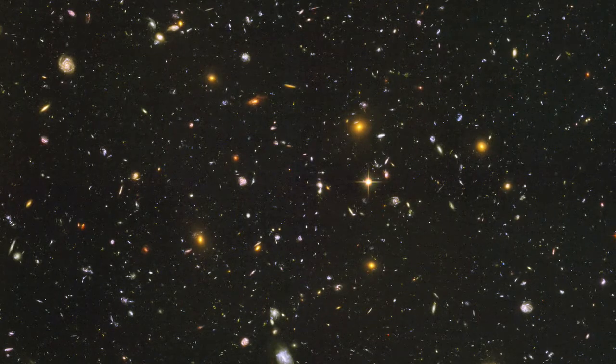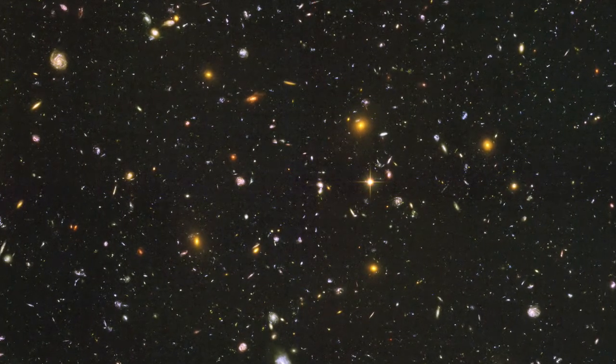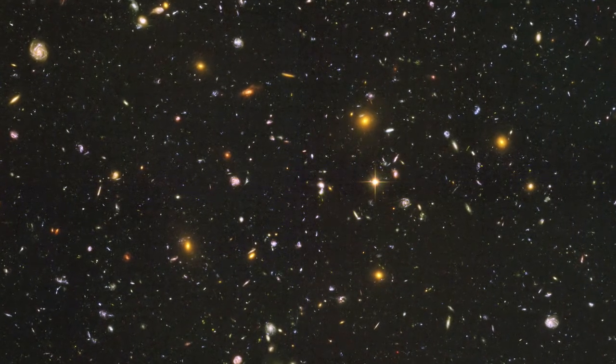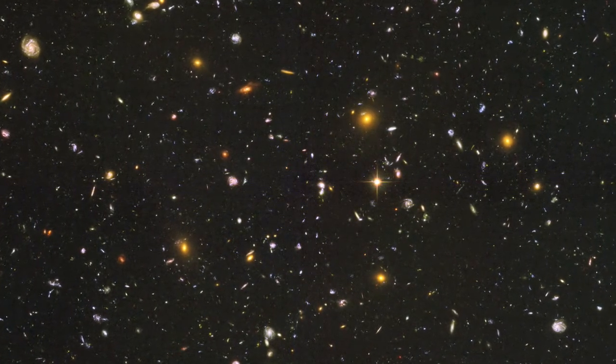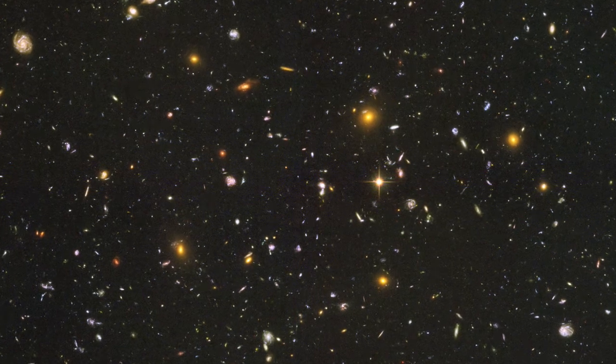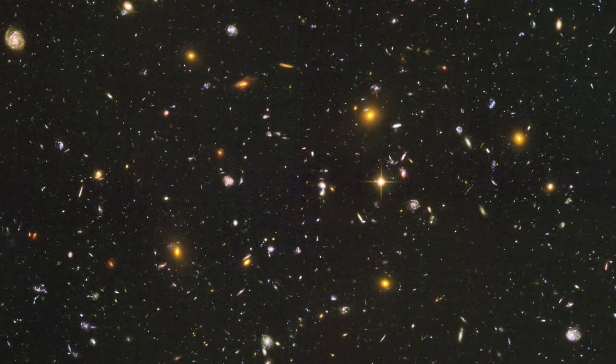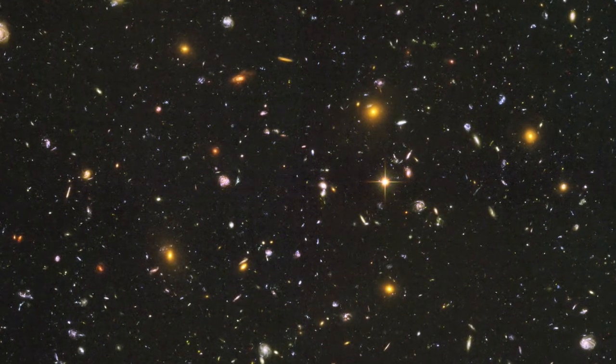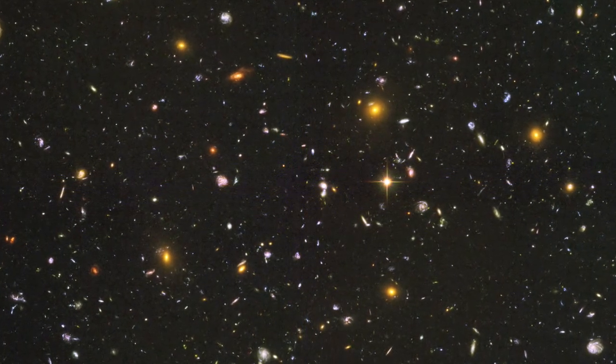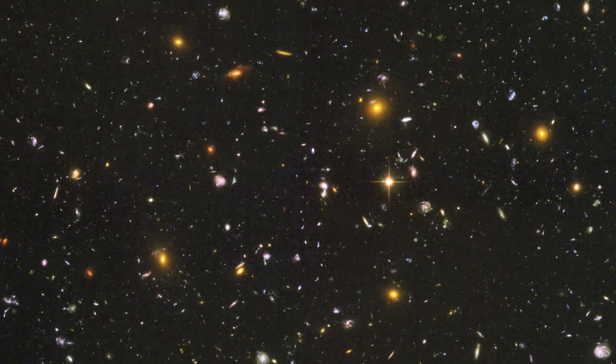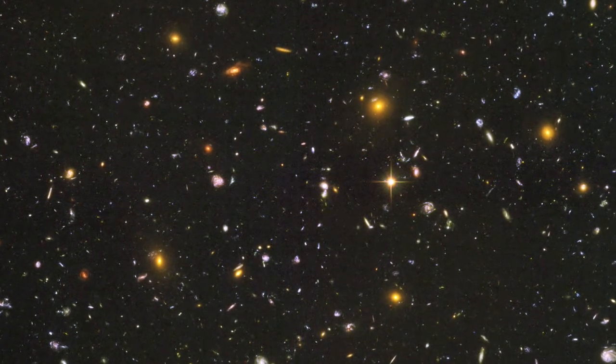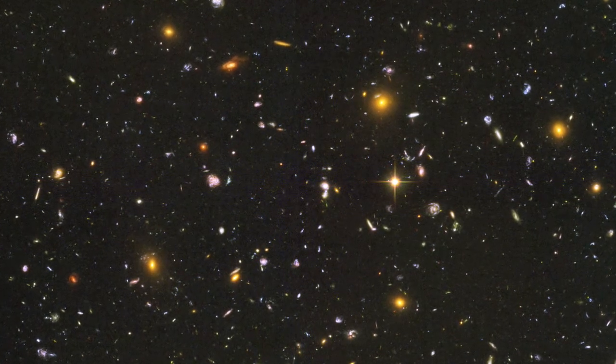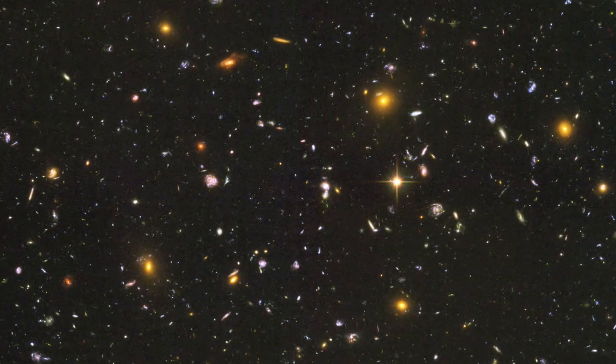This image is known as the Hubble Ultra Deep Field. It is the deepest view ever achieved of the visible ultraviolet and infrared universe. The image contains about 10,000 galaxies in an area of sky that is just one-tenth of the diameter of the full moon. Some of these galaxies are the oldest ever seen and existed just 400 million years after the Big Bang.